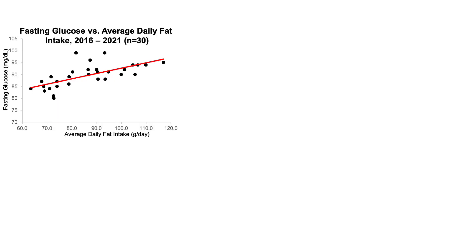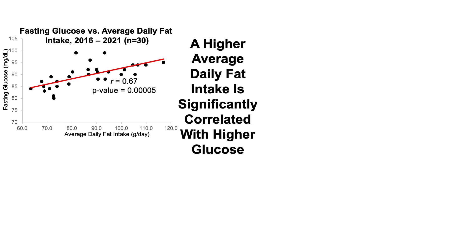Of all the macronutrients — fat, protein, carbohydrate, and fiber — the macronutrient most strongly correlated with my fasting glucose levels over the past six years across 30 blood tests is my average daily fat intake. We can see a moderate correlation with a correlation coefficient of 0.67 and a highly significant p-value, suggesting that a higher average daily fat intake is significantly correlated with higher glucose.